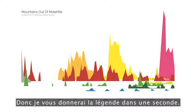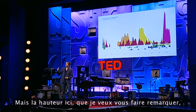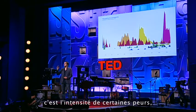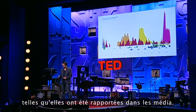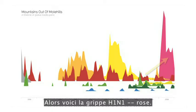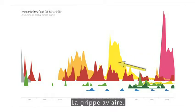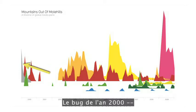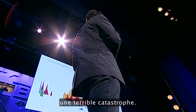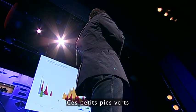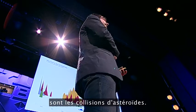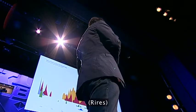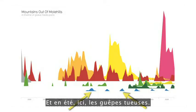The height here is the intensity of certain fears as reported in the media. So this: swine flu, pink. Bird flu. SARS, brownish here. Remember that one? The millennium bug — terrible disaster. These little green peaks are asteroid collisions. And in summer here, killer wasps.